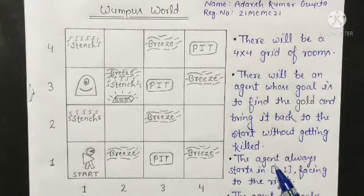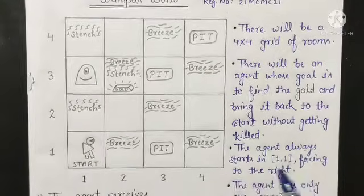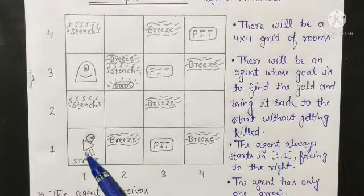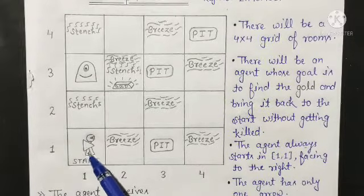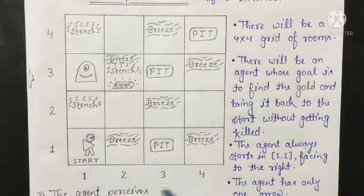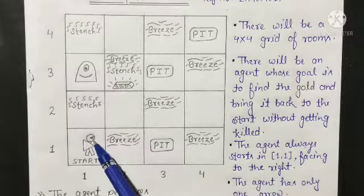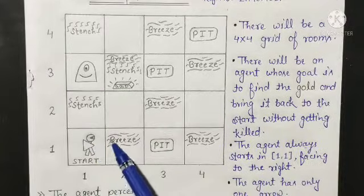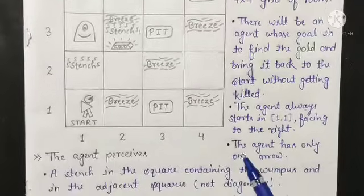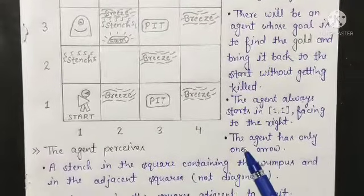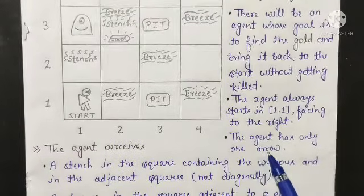The agent always starts in room 1,1 — that is the first row and first column — and faces to the right. The agent always faces to the right at the starting point. Keep in mind the agent has only 1 arrow.